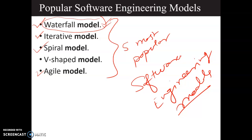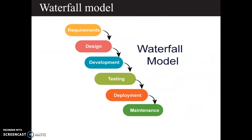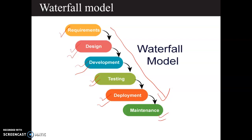The waterfall model has six different phases and follows a linear traditional model. First, you conduct requirement analysis; then based on the requirements, you develop your design; then comes the development phase where you write the code; then you test your code and system; then you deploy the system; and finally maintenance. This is a linear traditional model.